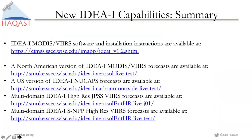To close out and summarize: if you're interested in downloading the IDEA International open-source software, the first link provides access to the site and installation instructions. It's been installed at multiple locations across the U.S. and Asia, and you end up with a web interface and a full set of forecasts. A live version is running at Space Science and Engineering for daily forecasts, and IDEA-I NUCAPS forecasts are also available at SSEC. High-resolution forecasts are available in two versions — one for operational JPSS VIIRS data and one for Suomi-NPP.